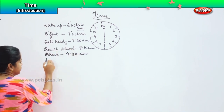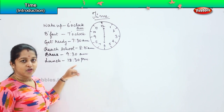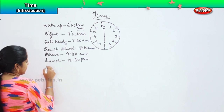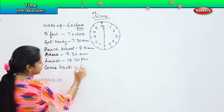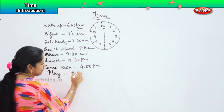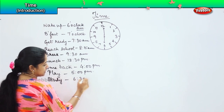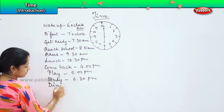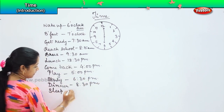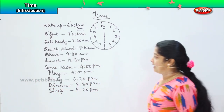Then I have my lunch at 12:30 p.m. Once the entire cycle completes 12, it changes to p.m. So now I come back from school at 4:00 p.m., I go to play at 5:00 p.m., I do my study at 6:30 p.m., I have my dinner at 8:30 p.m., and I go to sleep at 9:30 p.m. This is my entire schedule which I follow on a daily basis.